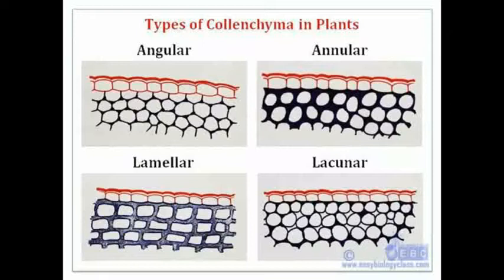The first type is angular collenchyma, where the thickening occurs only at the angles of the cells. The second is annular collenchyma, where thickening occurs all around the cells. The third is lamellar collenchyma, where thickening resembles a layered pattern. The fourth is lacunar collenchyma, where the intercellular spaces are filled with thickening material.